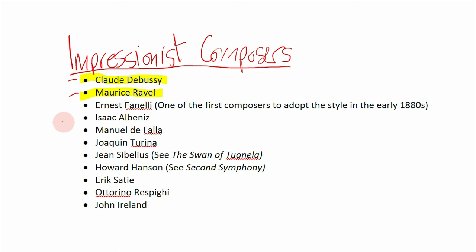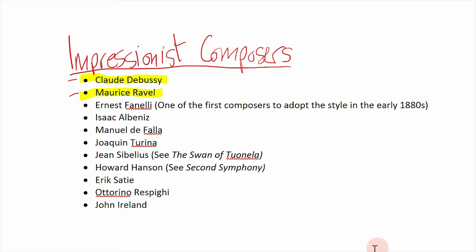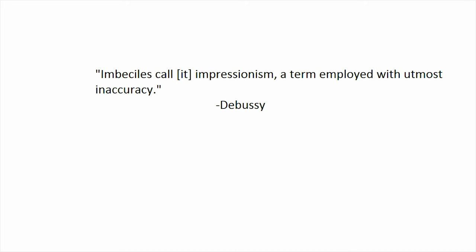Claude Debussy and Maurice Ravel were the main men of impressionist music. They were both French composers active at the turn of the 20th century and beyond. Debussy and Ravel actually didn't really like when their music was referred to as impressionist. Debussy much preferred the term symbolism, as that was the literary movement that directly inspired him. He was quoted as saying: 'Imbeciles call it impressionism, a term employed with utmost inaccuracy.' Other composers influenced by impressionism include Albéniz, Manuel de Falla, Eric Satie, and others.